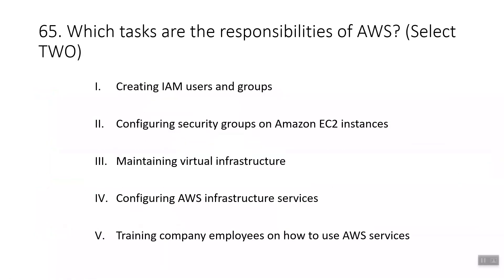Question sixty-five: which tasks are the responsibilities of AWS? The answers are maintaining virtualization infrastructure and configuring AWS infrastructure devices. All other options listed are tasks that are responsibilities of customers.